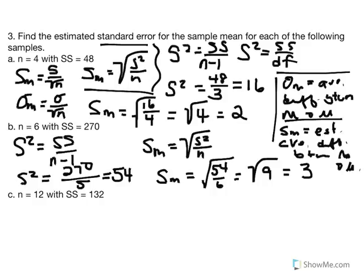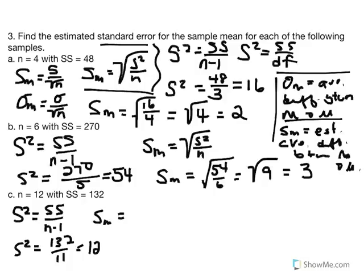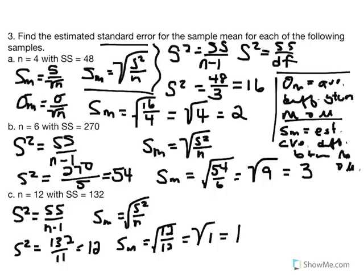The next one: n equals 12, SS equals 132. We calculate variance first: variance equals SS over n minus 1, so variance equals 132 over 11. 132 divided by 11 gives us 12. Our estimated standard error equals the square root of variance over n, which is the square root of 12 over 12 — essentially the square root of 1 — equal to 1. This is the estimated average difference between a sample mean and population mean in a t-distribution.